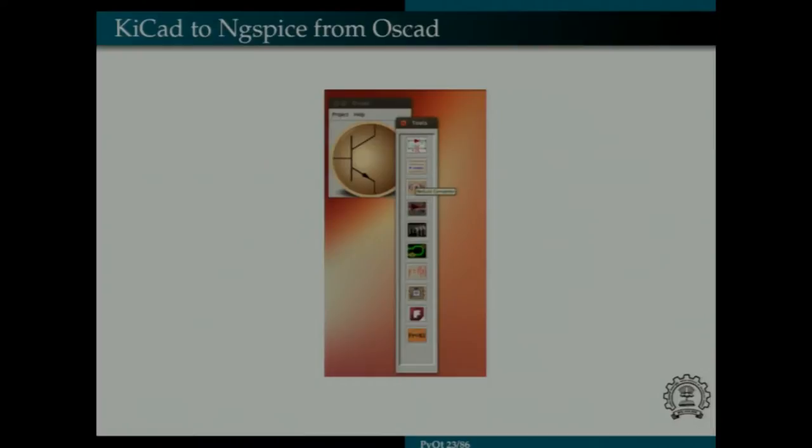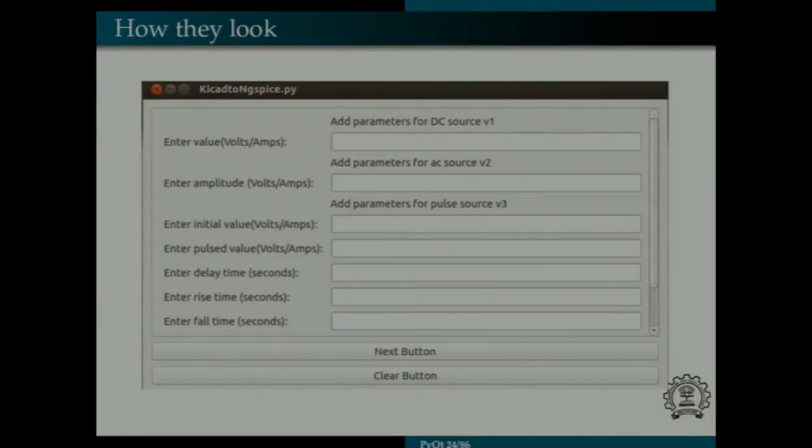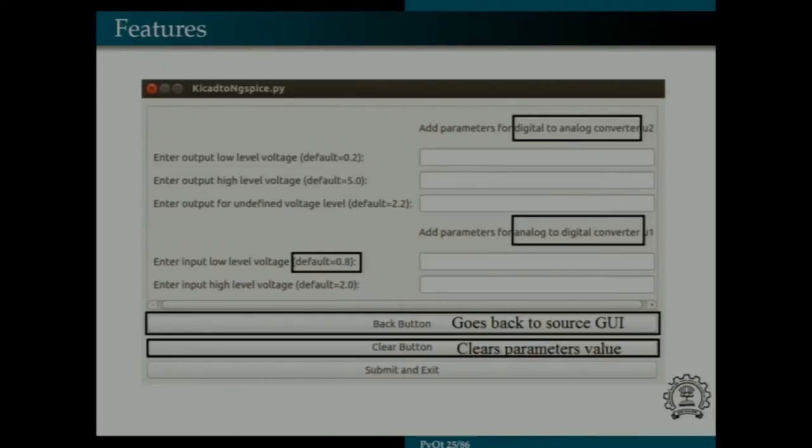As you can see this is the front end of OSCAD GUI. The third button from the top represents KICAD to NGSPICE converter. Previously we used to enter the values of the parameters through terminal but now GUI for the same. This is how my GUI looks. My GUI consists of two windows, one for the source list and other for the model list. This is one for the source list. The GUI is basically dynamic. The GUI is created by taking the input from the netlist generated from the KICAD file and then according to the inputs of the parameters it forms this GUI. There's a next button here.